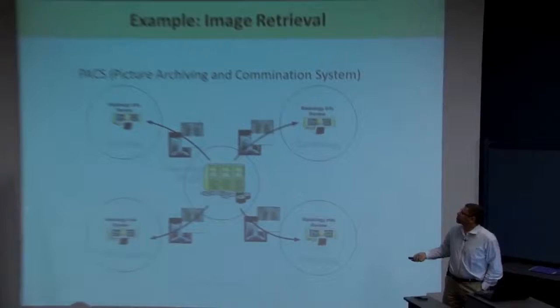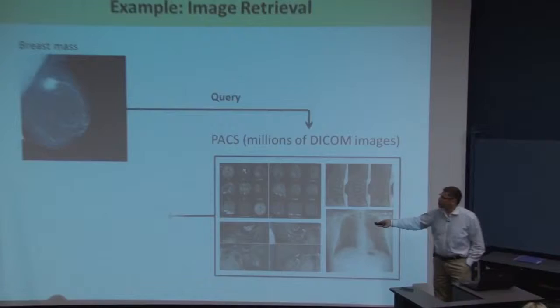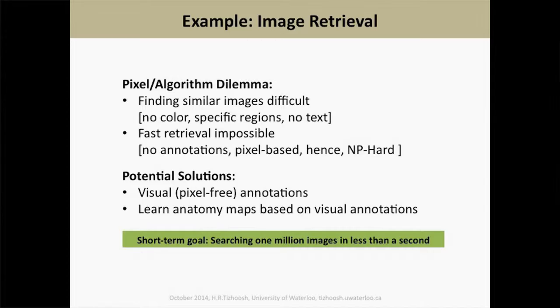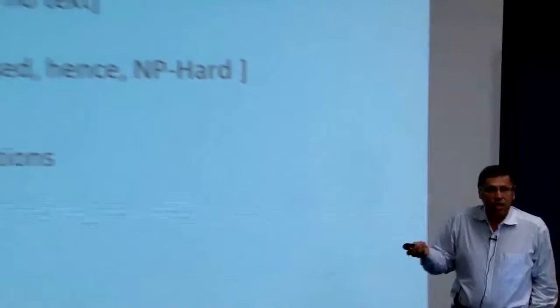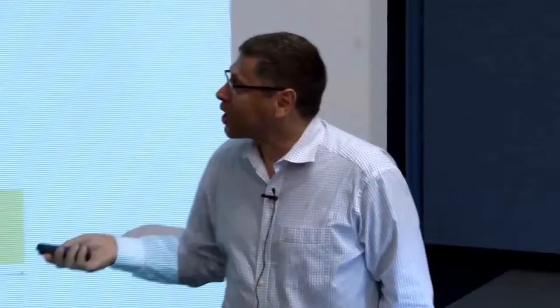Another problem is image retrieval: we have PACS for many different fields, and given a query you have to find something in a huge database. You can find similar cases and treatment methods to assess success rates, but finding similar images is very difficult and fast retrieval is basically impossible — NP-hard, not doable even with a supercomputer. The potential solution requires visual annotations, since there are no text annotations for tumors, tissue types, or cancerous tissue. We need to learn the anatomy map based on visual annotations. The short-term goal: can you search one million images in less than a second, not using text but inside the images? These three problems are the major challenges we are trying to deal with.